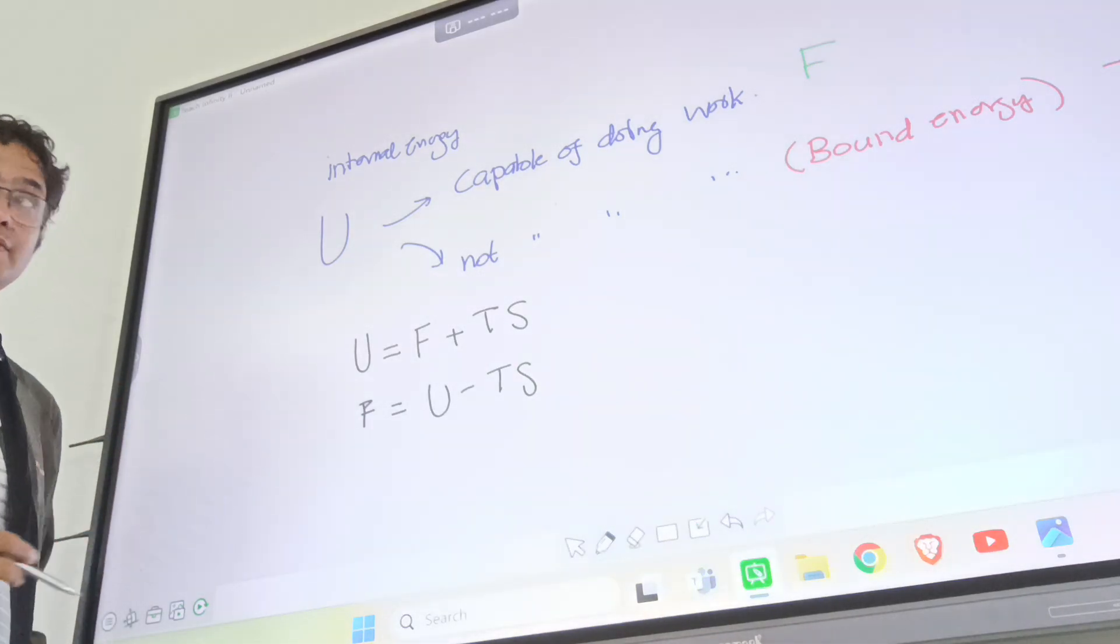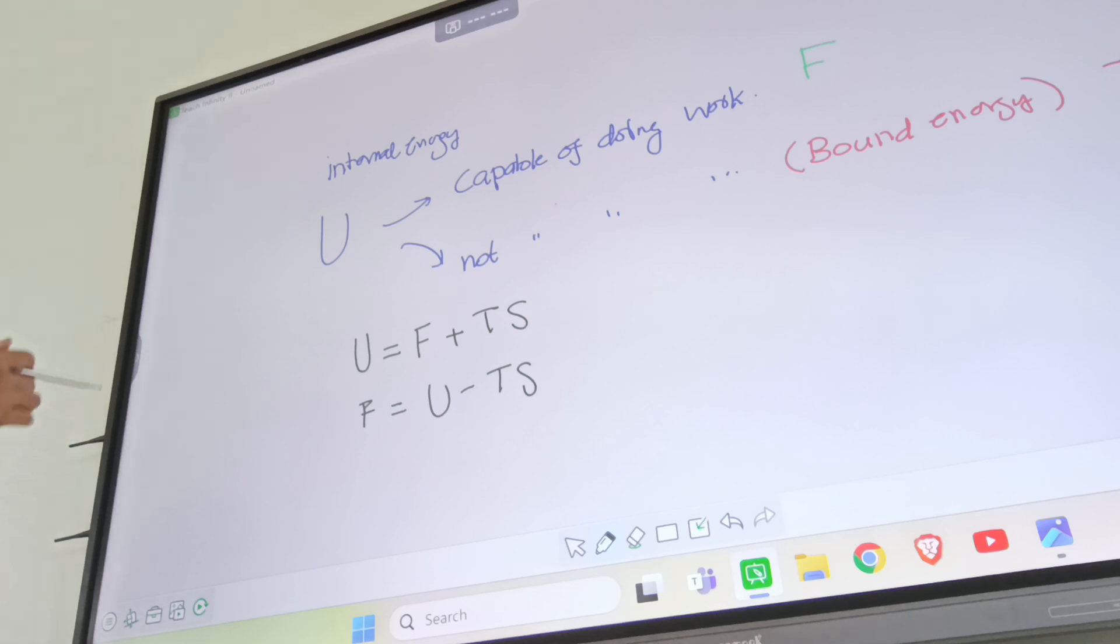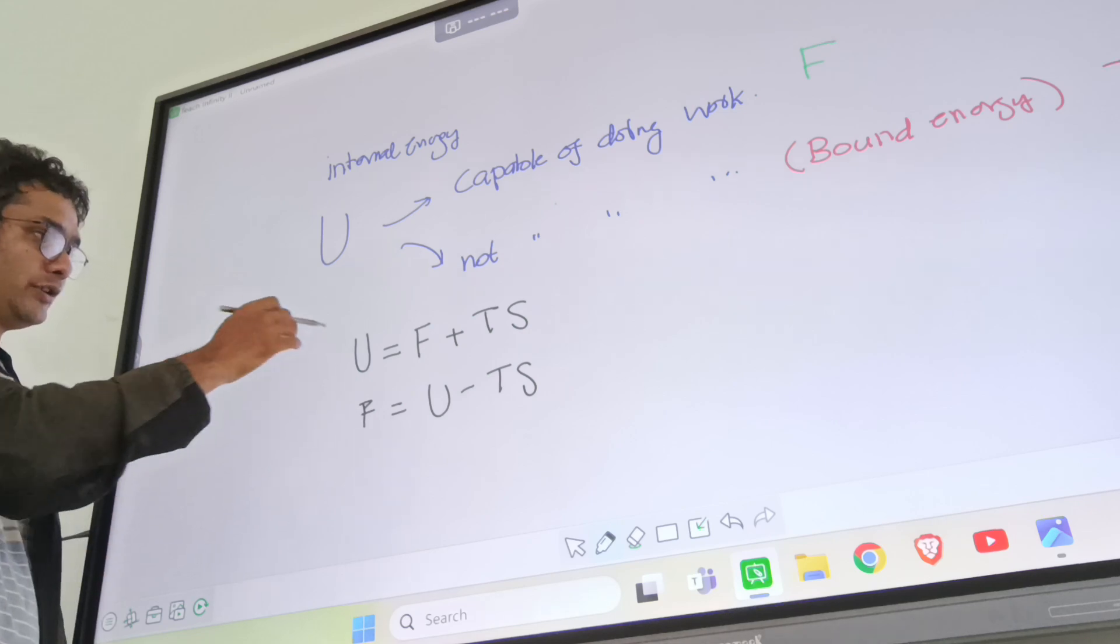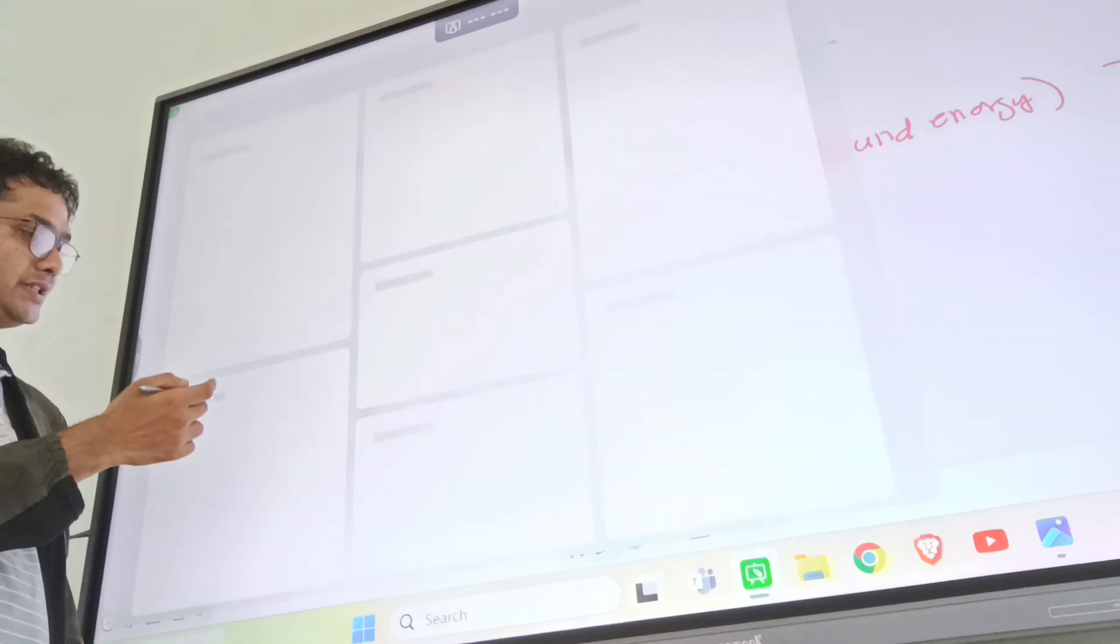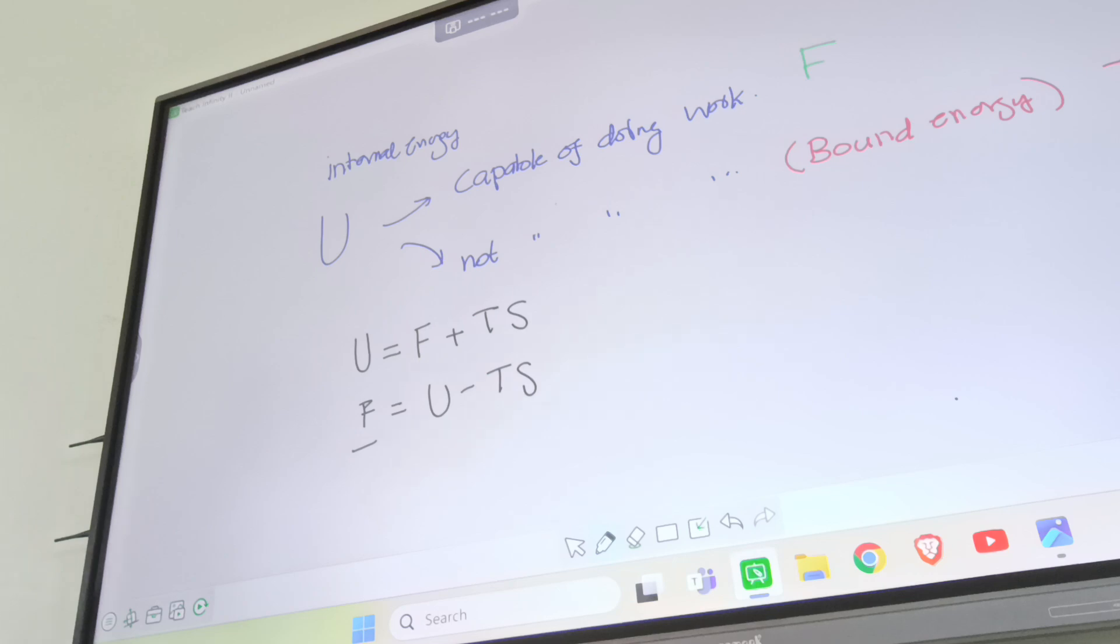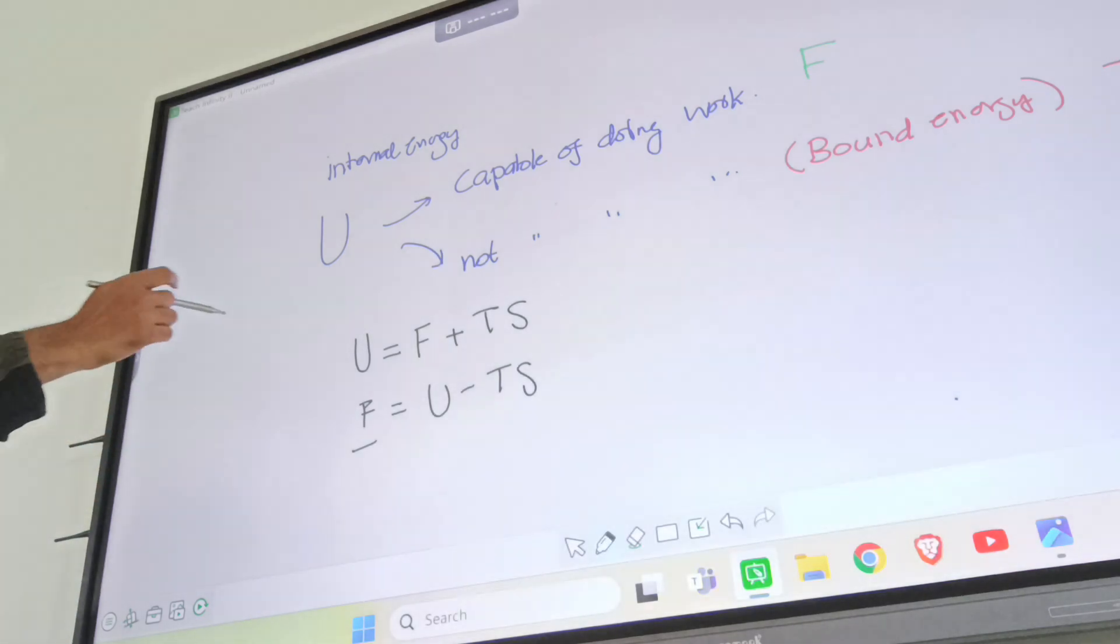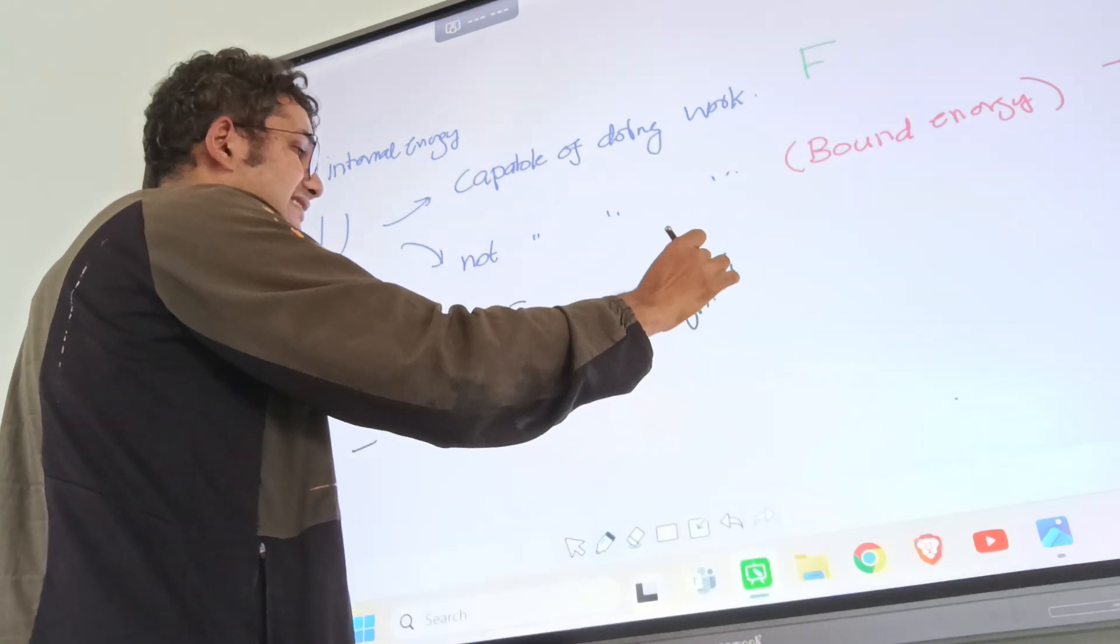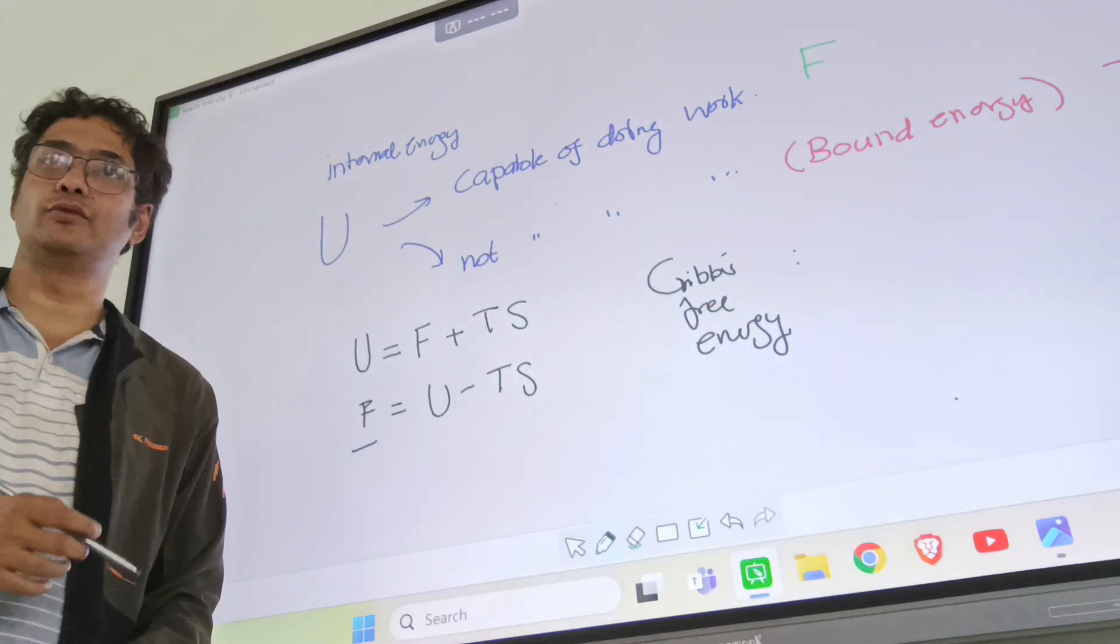Can you understand what is U? Internal energy. What is F? U is a part which is capable of doing work. Now what about Gibbs free energy? Gibbs free energy is the energy left after doing all sorts of work.